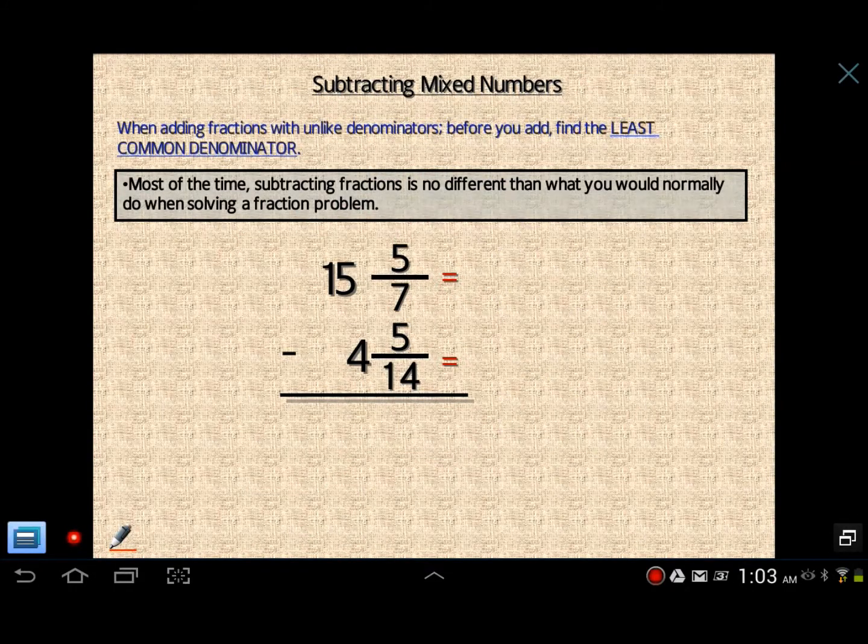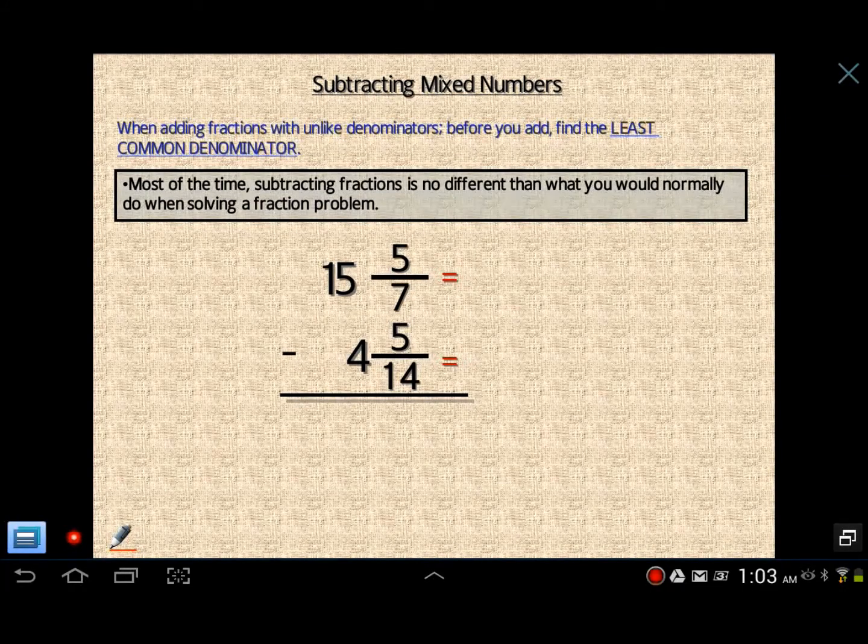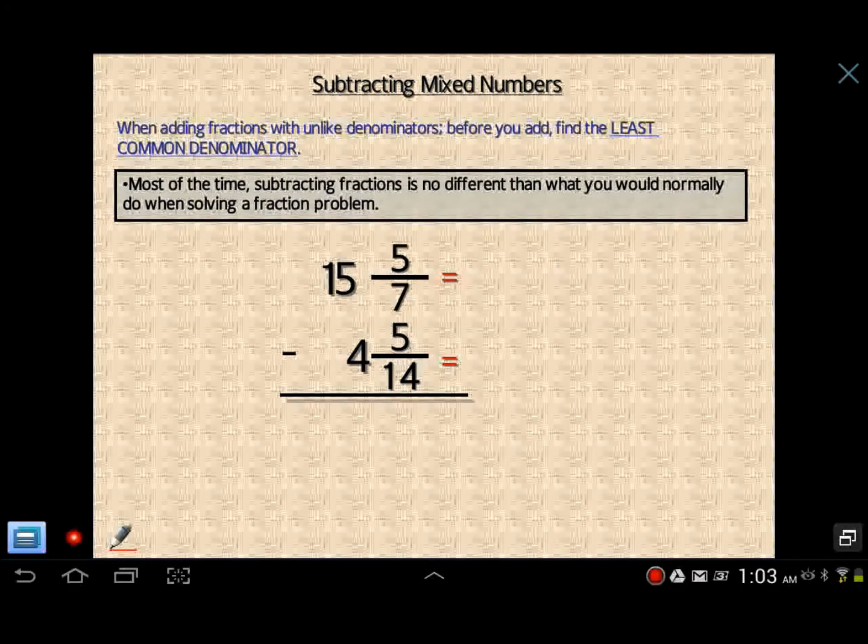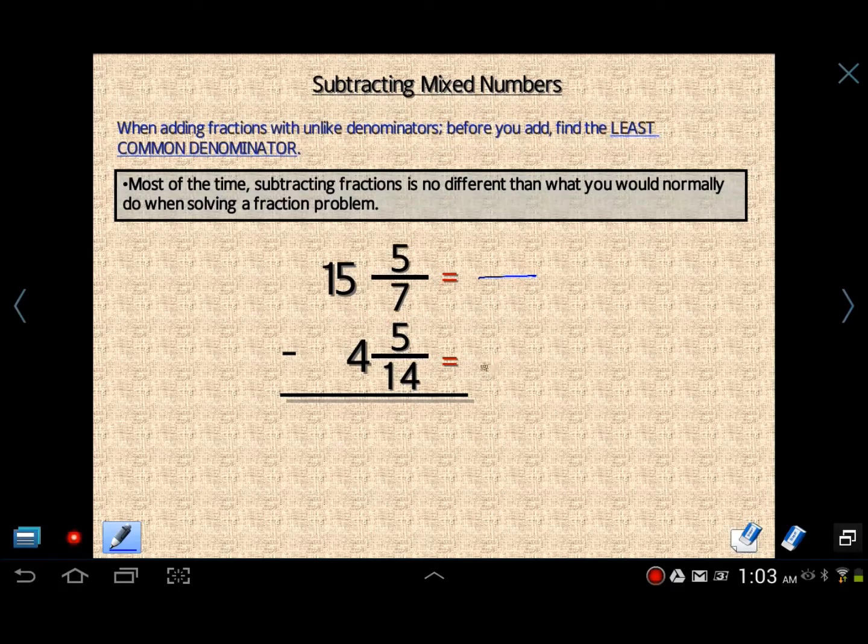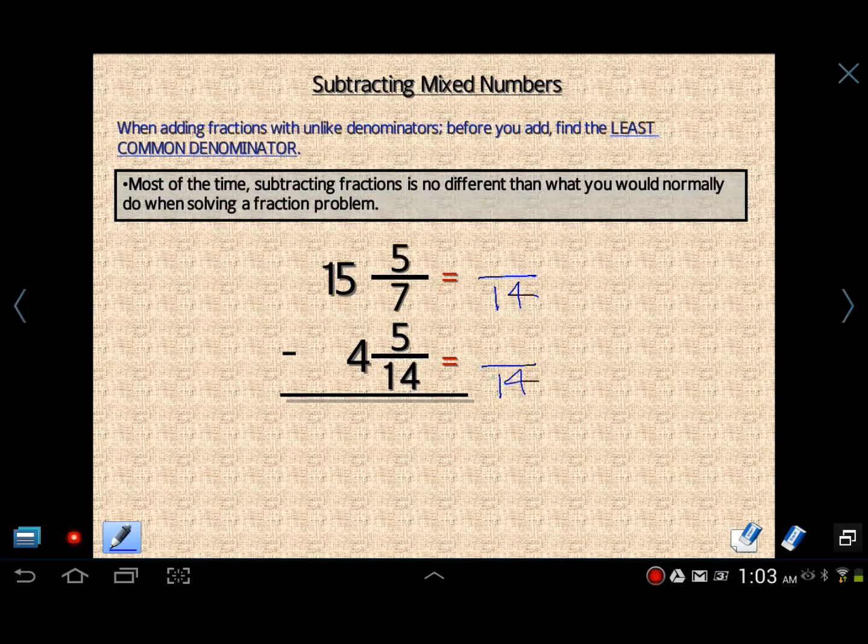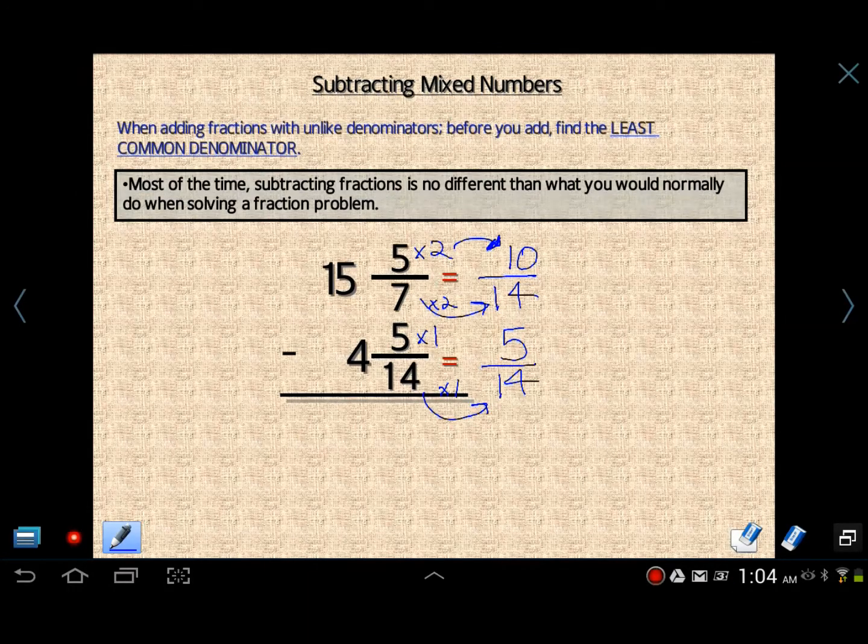We have 15 and 5 7ths minus 4 and 5 14ths. This is an example of a problem where nothing is really unusual about it. You still go through the typical motions. We find an LCD. The LCD of 7 and 14 is 14. Remember, a number can be a multiple of itself. So this is okay. 14 times 1, same thing right here. 5 times 1 is 5. 7 times 2 is 14. 5 times 2 is 10. So nothing really that difficult about this.